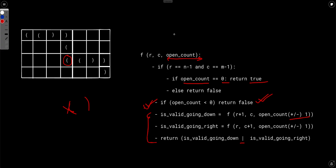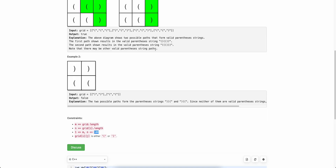The new time complexity is r×c×(r+c), since the maximum possible value of opensCount is r+c (when every cell is an opening brace). This is the complexity of the memoized solution. Let's quickly look at the code.